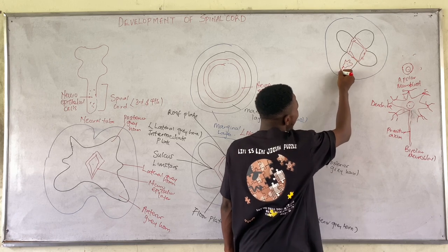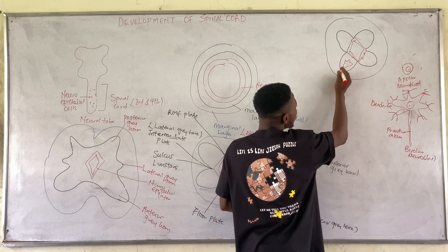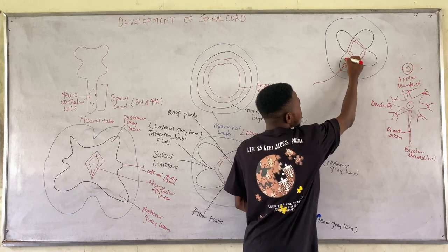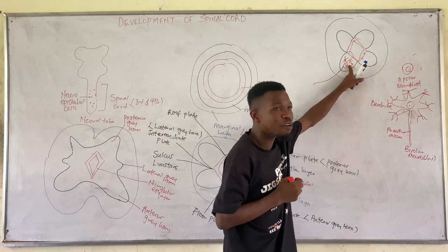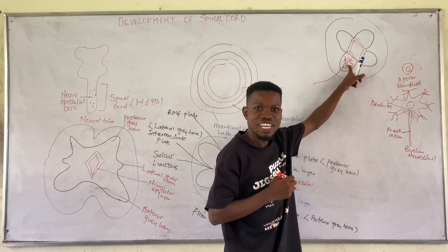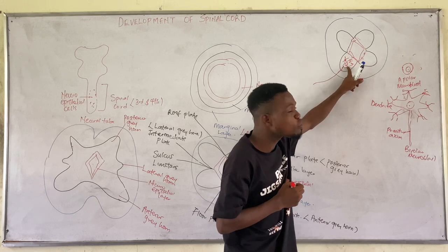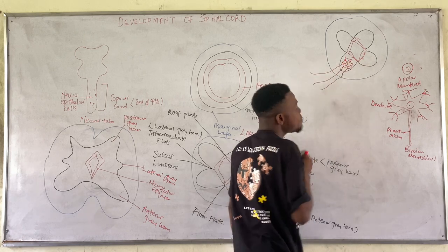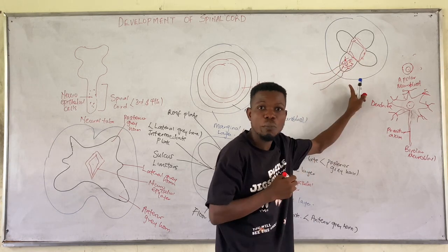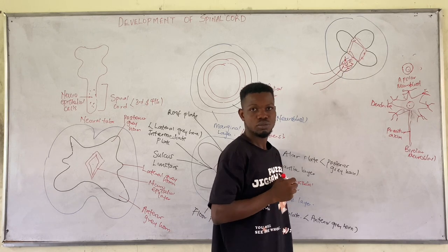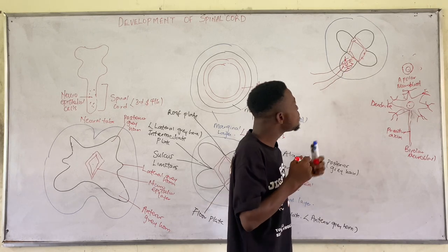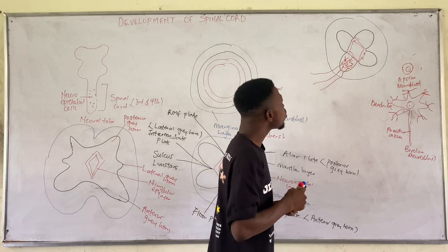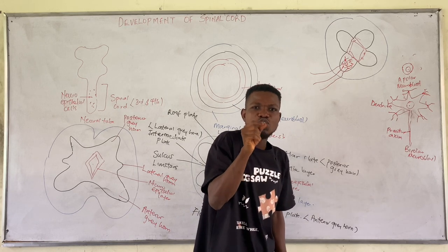These multipolar neuroblasts coming from the basal plate are many in number, and collectively they will become the ventral motor root. So the basal plate gives rise to the ventral motor root.